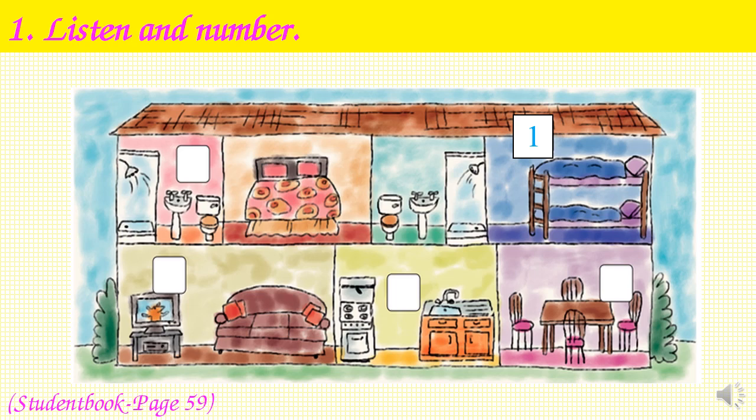Listen and number. One: Look, this is my house. It has an upstairs and a downstairs. Upstairs you can see two bedrooms. Two: Also upstairs, you can see two bathrooms. Three: Downstairs, there is a kitchen. Four: Look, this is the living room. It has a TV and a sofa. Five: And here is the dining room. The family can eat here.